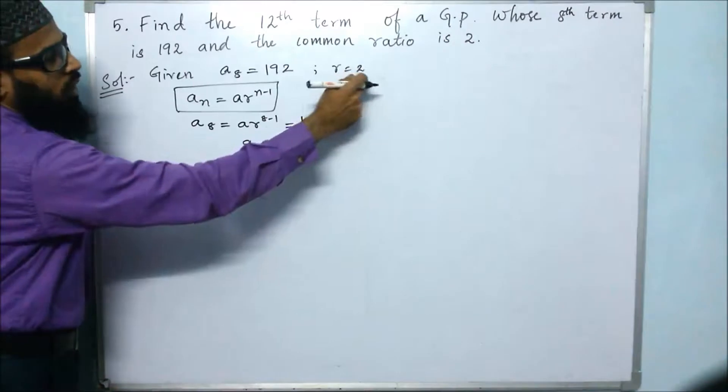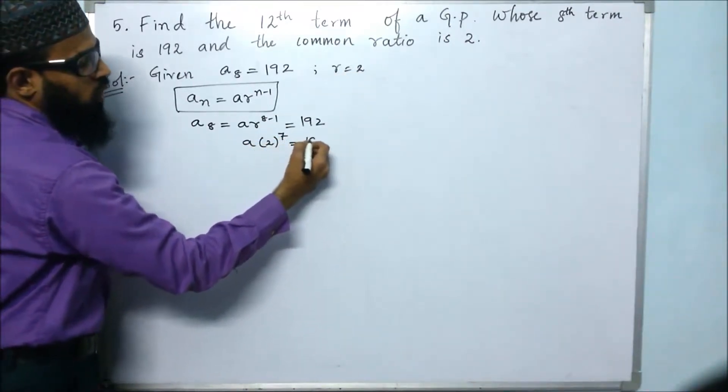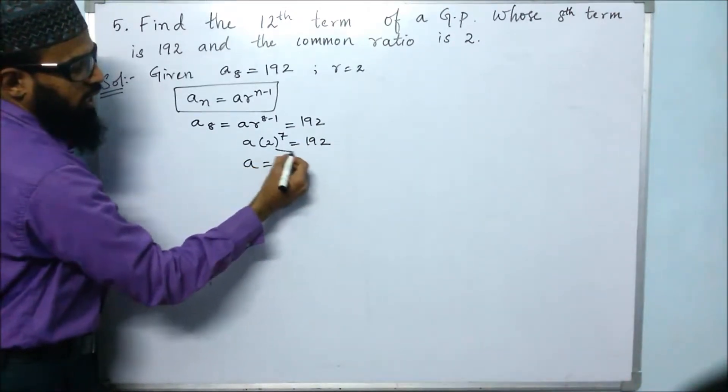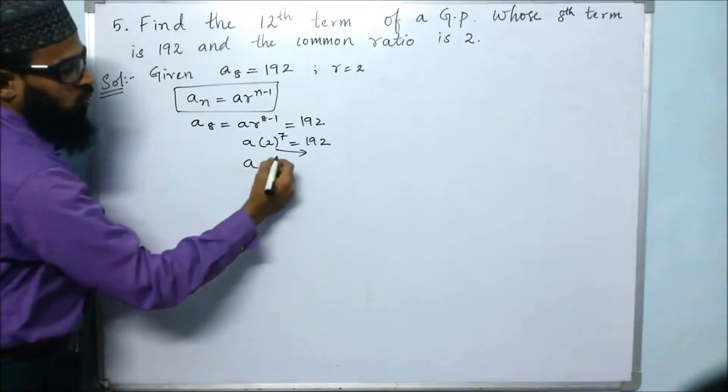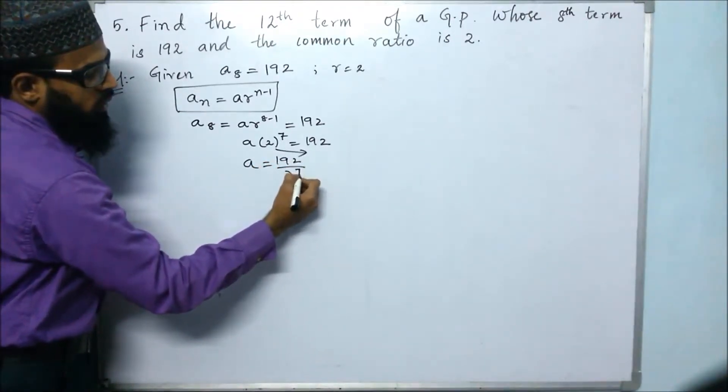And we know what is the value of r. r is 2. So a times 2 to the power of 7 equals 192. So a equals 192 divided by 2 to the power of 7.